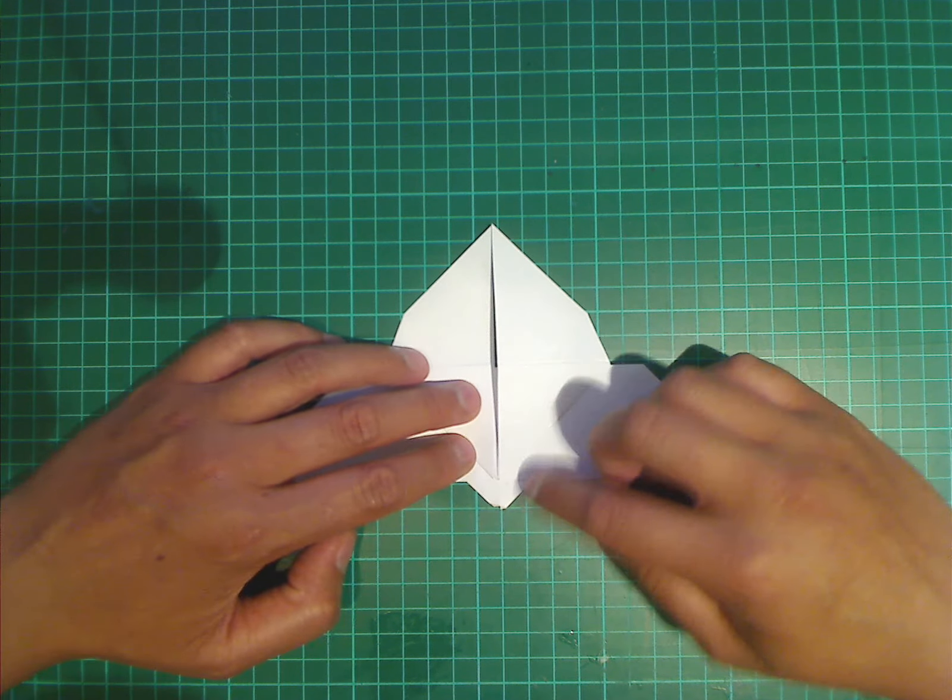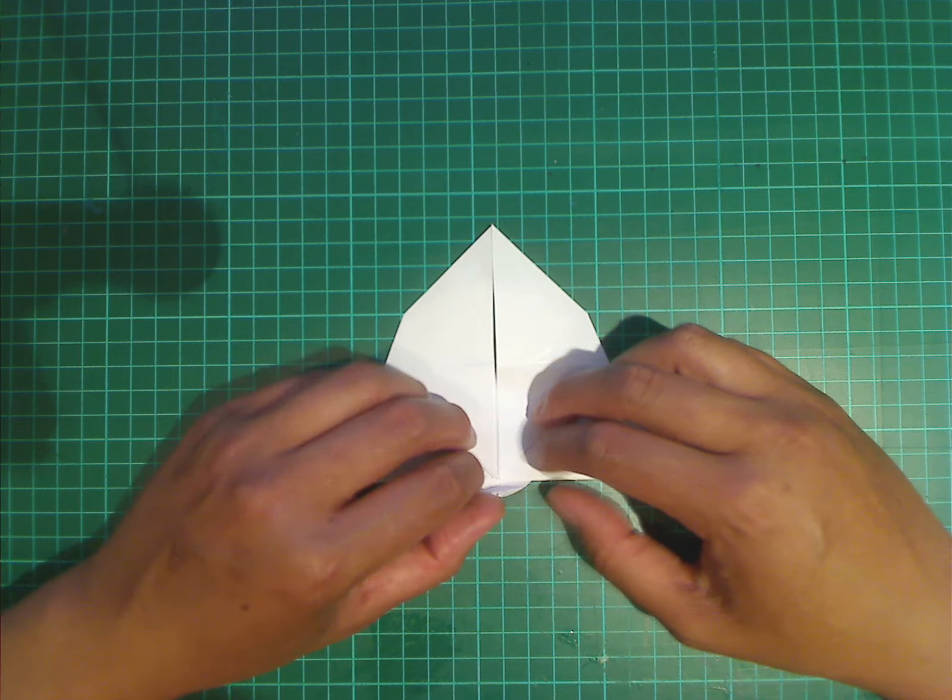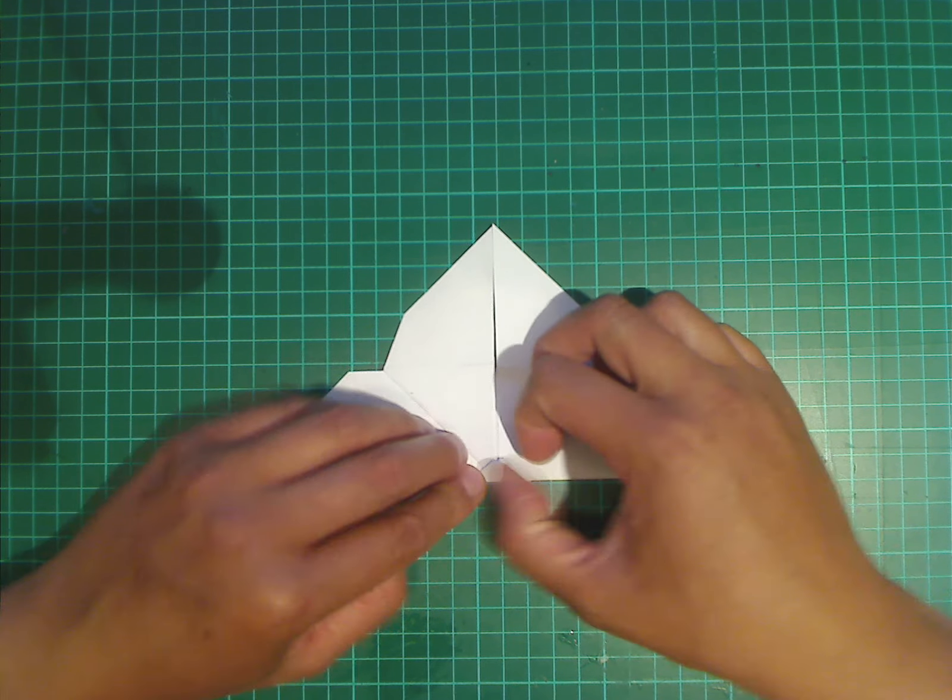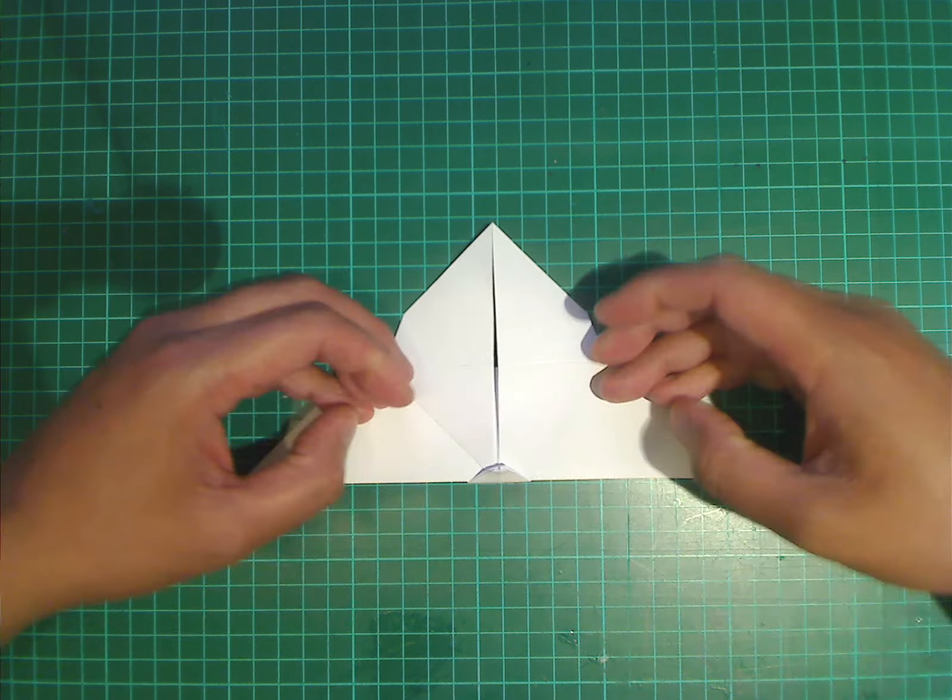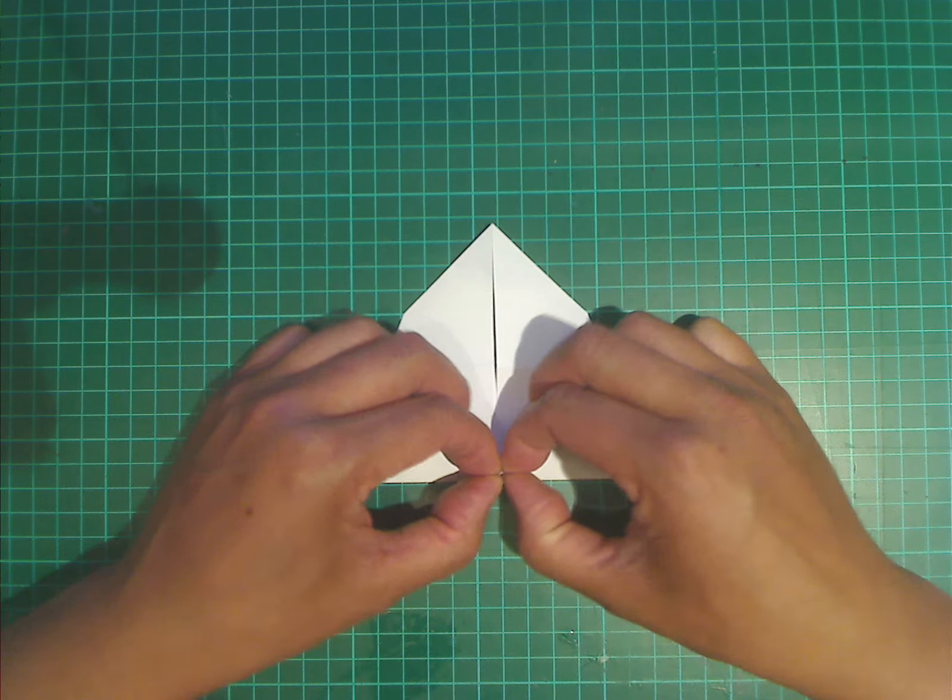And see this triangle piece here? We're just going to fold it flat against the model. And then we're going to fold it out again, just by a little bit.